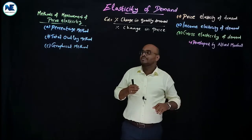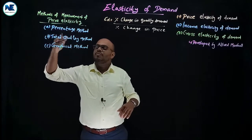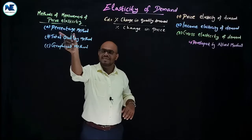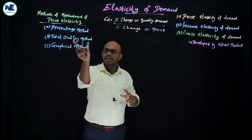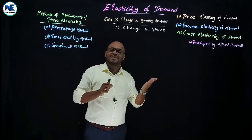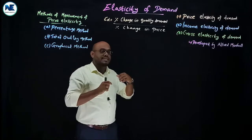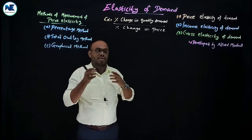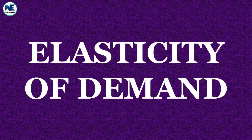The methods of measurement of price elasticity include the percentage method or proportionate method, the total outlay method or expenditure method, and the graphical method — which covers the straight line method, point elasticity, and arc elasticity.